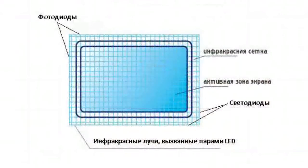Infrared touchscreens are used when high picture quality is required. Their principle of operation is rather simple. Two arrays of LEDs are arranged horizontally and vertically, and on the other side there are two arrays of photodetectors. Each LED corresponds to each photodetector.